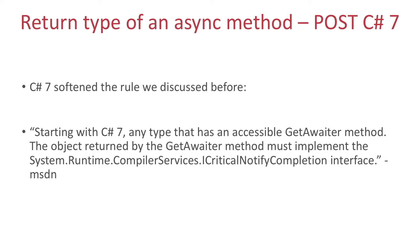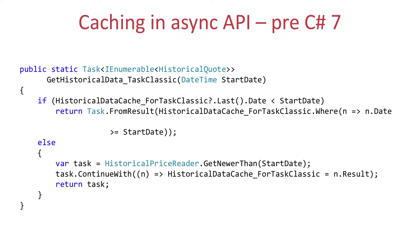In C# 7 this rule was changed. C# 7 generalizes the notion of something that is task-like. The official documentation explains that starting with C# 7, you can return everything that has an accessible GetAwaiter method, where the object returned by GetAwaiter must implement the System.Runtime.CompilerServices.ICriticalNotifyCompletion interface. The common use cases where Task and Task<T> were problematic are cases where you cache the values in an async API.